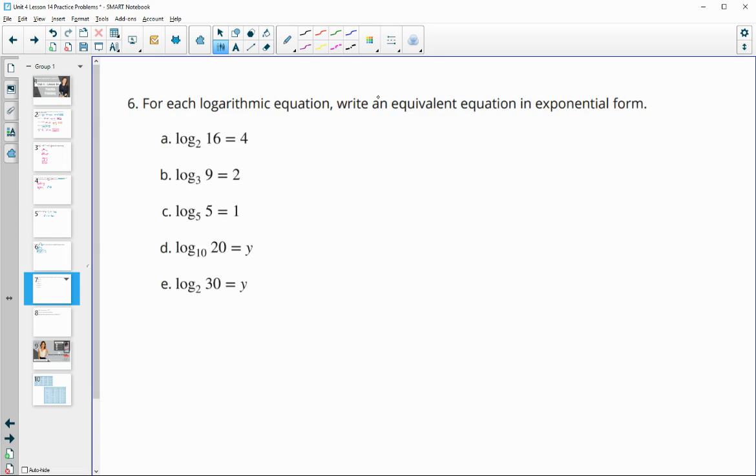Number six, for each logarithmic equation write the equivalent equation in exponential form. Remember we do the base, so 2 to the 4th equals 16, 3 to the 2nd equals 9. This last number is always the result, and your base is always the base. So 5 to the 1 equals 5, 10 to the y equals 20, and 2 to the y equals 30. That's rewriting from logarithmic to exponential.